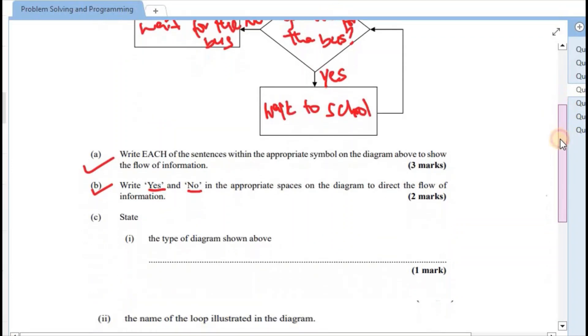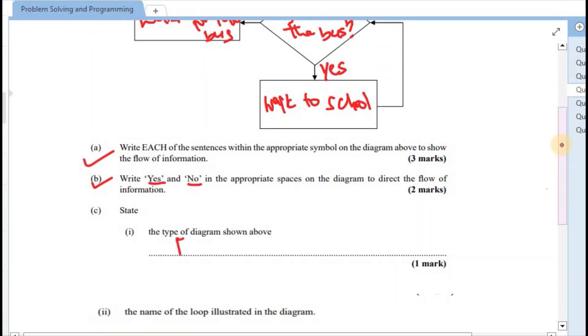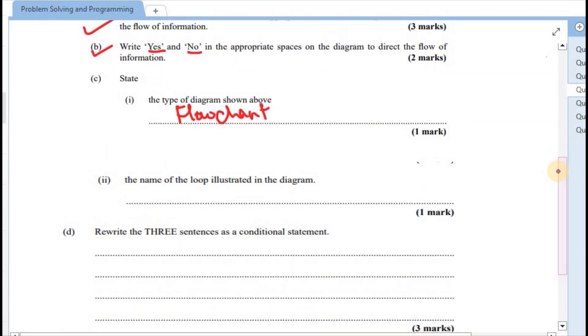C. I says to state the type of diagram above, and that would be a flow chart. All right. II names the type of loop, which I would have discussed earlier. So this is a while loop.